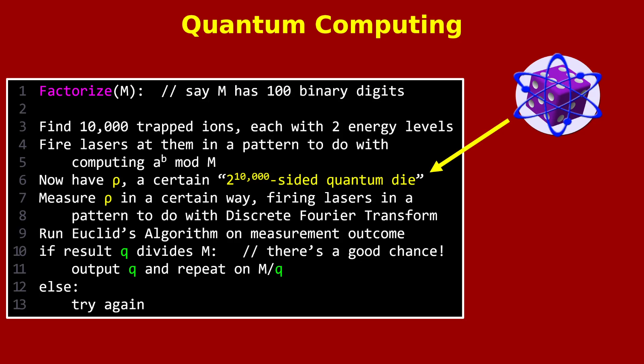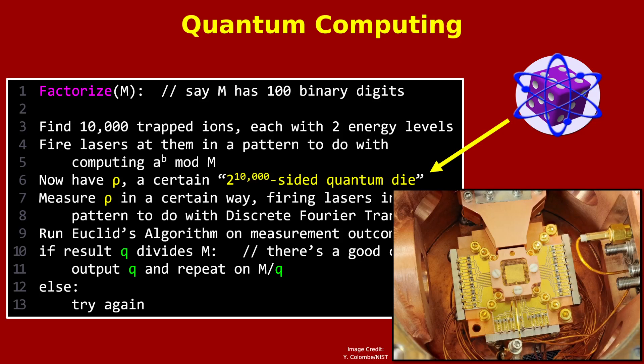10,000 trapped ions, and physically manipulating them to produce what I'll call a quantum die, which is the quantum generalization of a probability source. Turning this code into physical reality is, in principle, possible, but it still remains an enormous practical engineering challenge. Here, for example, is a picture of, I believe, two trapped ions able to be manipulated.